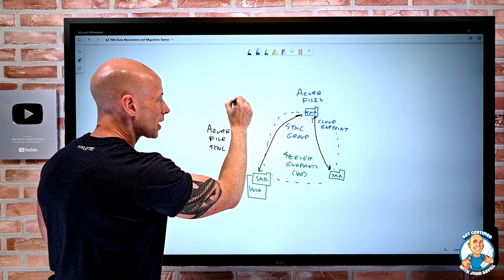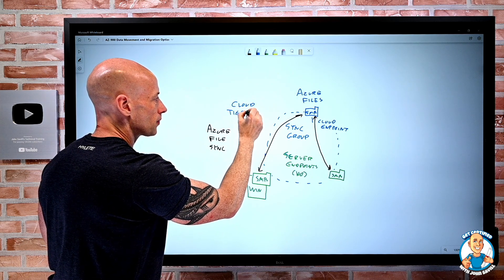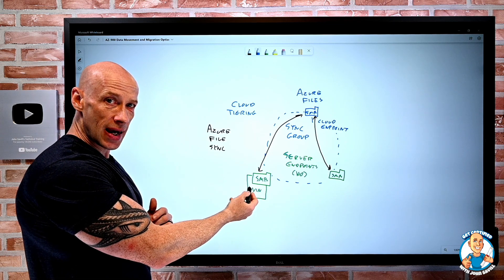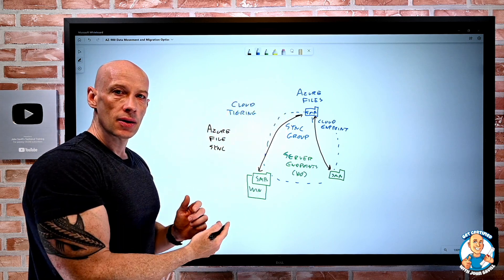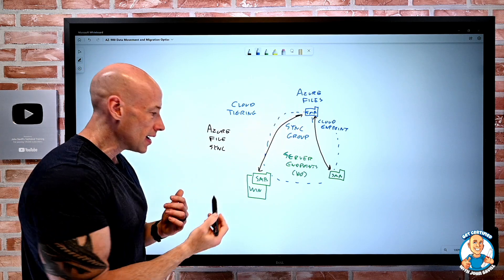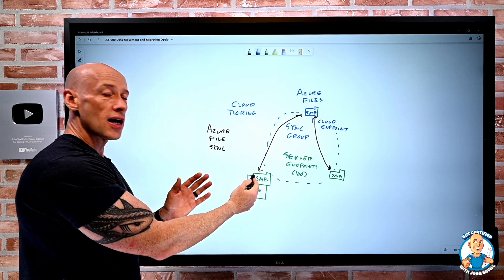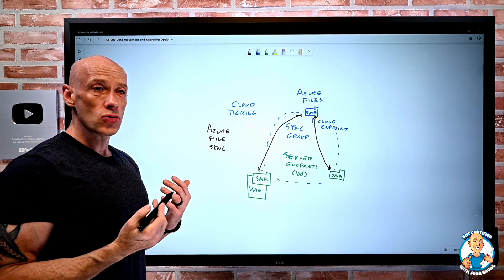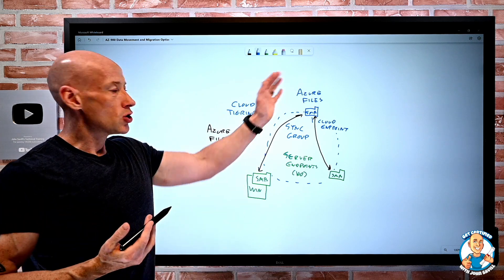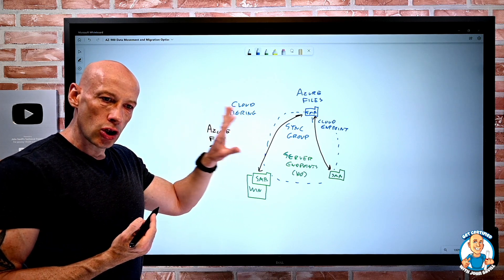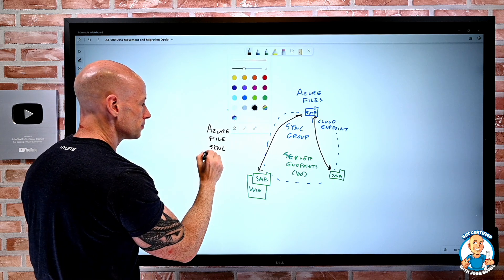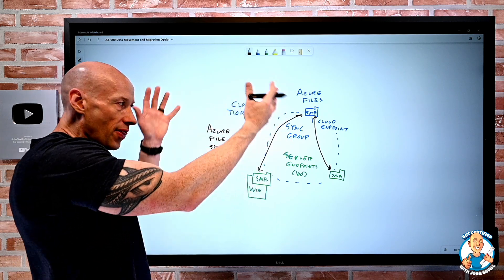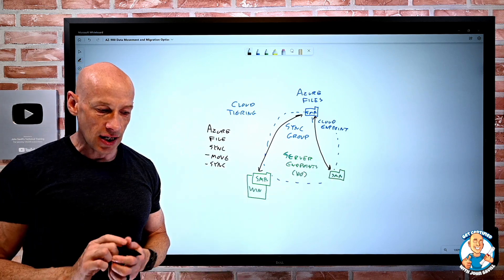Additionally, I can do something called cloud tiering. I have a choice: either when I reach a certain threshold of free space, it can start offloading the least accessed data to the Azure file share. It still has a link to it. If I access it, it brings it back down. Or I could say, if it's not being used for 60 days, just tier it off to the cloud as well. So this is a great solution if I want to move my data, keep it synchronized for resiliency purposes, or keep other Windows-based file servers synchronized with each other.